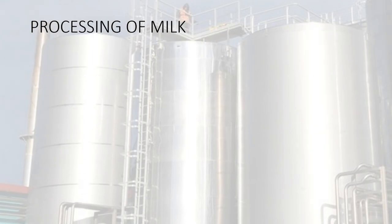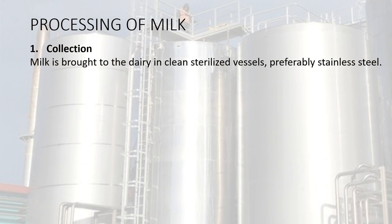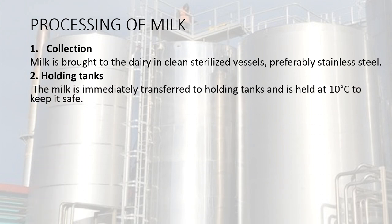Processing of milk. Collection: milk is brought to the dairy in clean sterilized vessels, preferably stainless steel. Holding tanks: the milk is immediately transferred to holding tanks and is held at 10 degrees Celsius to keep it safe.